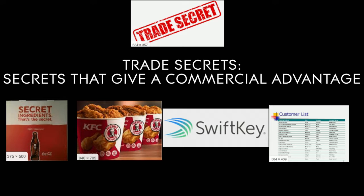And then, finally, trade secrets. If you are achieving something through means that you want to keep secret, you can protect that by basically creating a system in which it is never released to the public. For example, the KFC secret 11 herbs and spices recipe. One of my old clients, SwiftKey, decided that parts of their algorithm they would keep completely secret. This is useful when you have something that you can keep in a black box and you're confident someone won't be able to re-engineer it. The problem with trade secrets is that once the secret is out of the box, you're suing people for breach of trust or contract, and you can't put a secret back in a box once it's out.